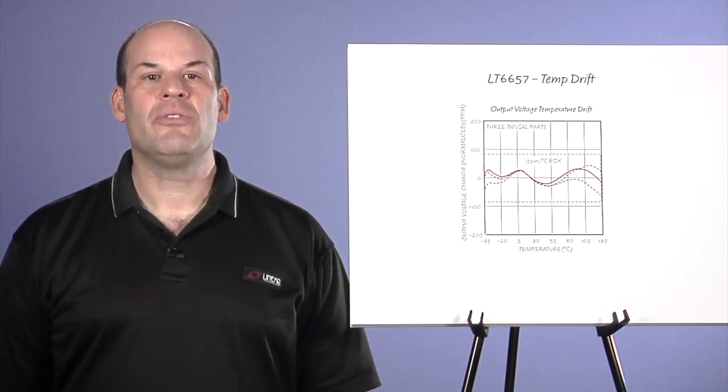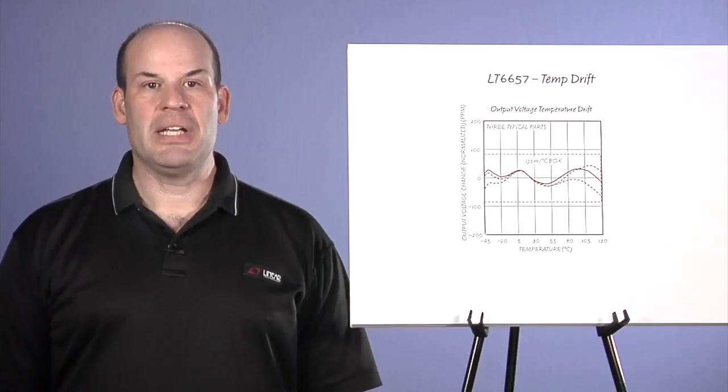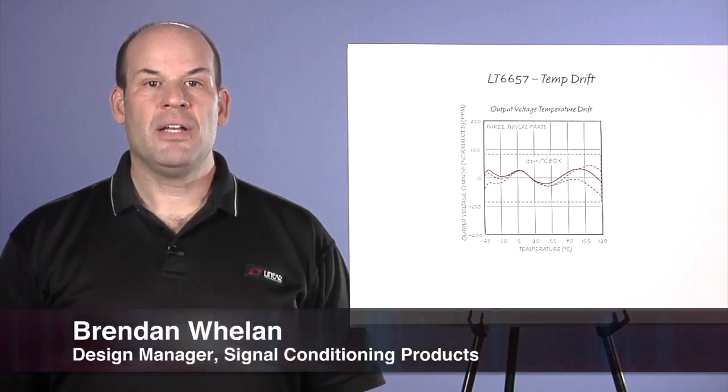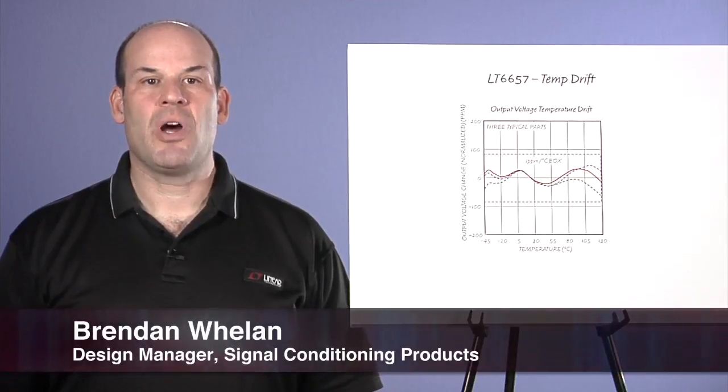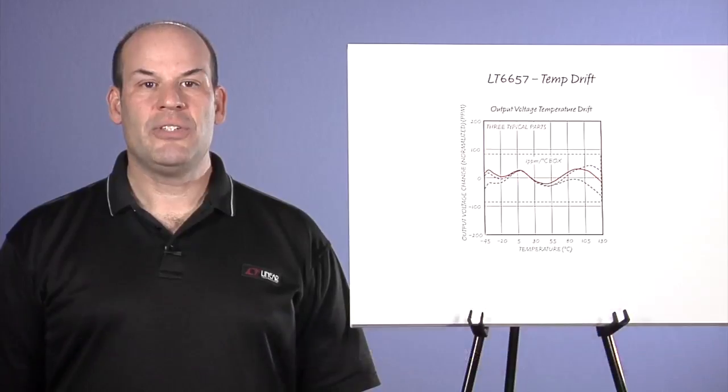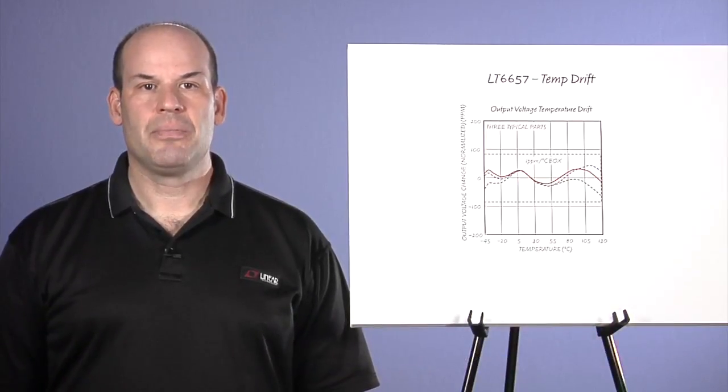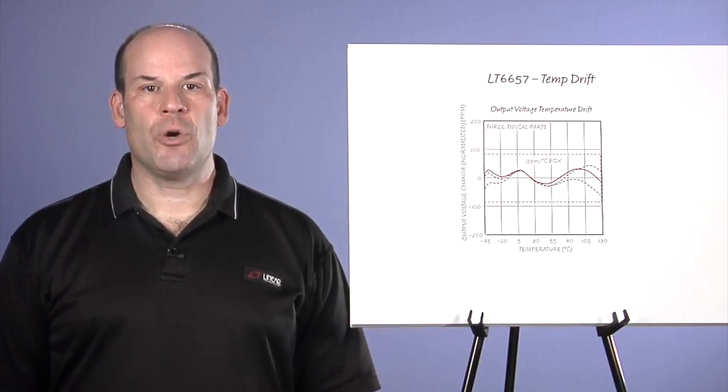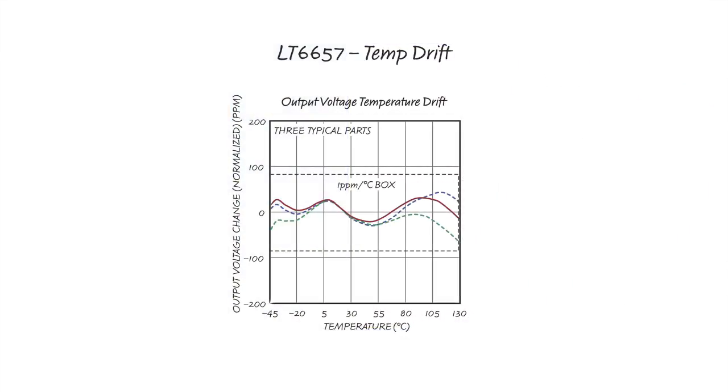Over time, bandgap performance has improved and in some cases exceeded buried zener stability and noise while retaining flexibility from ever-increasing features. I'm Brendan Whalen, a design manager for Linear Technology signal conditioning products. I'd like to introduce one such voltage reference, LT6657. To be clear, LT6657's features start with performance. At 1.5 ppm per degree C drift, it is the lowest temperature coefficient bandgap voltage reference.